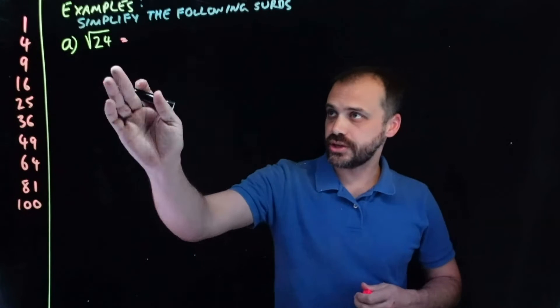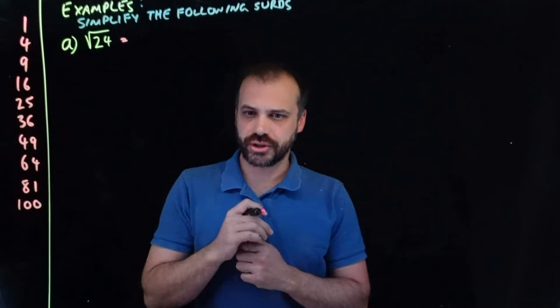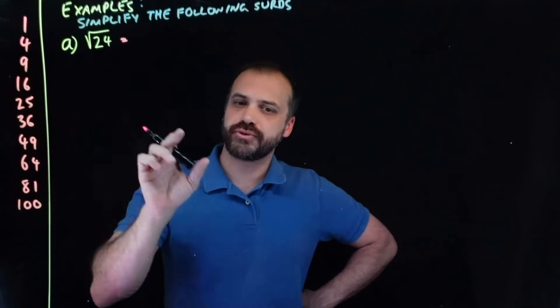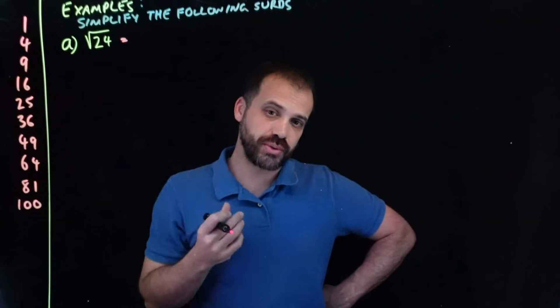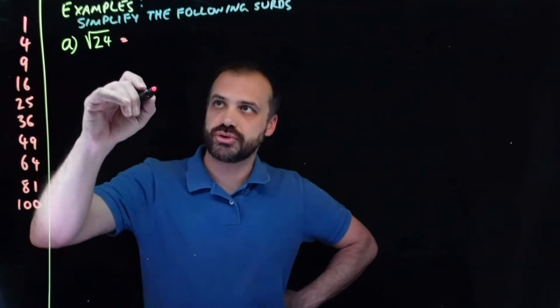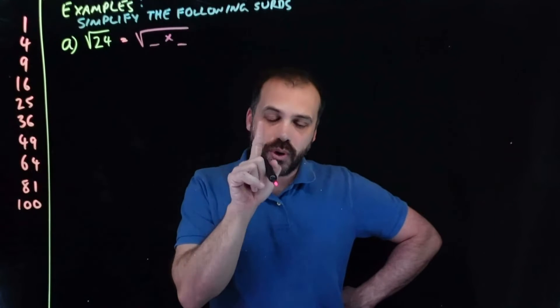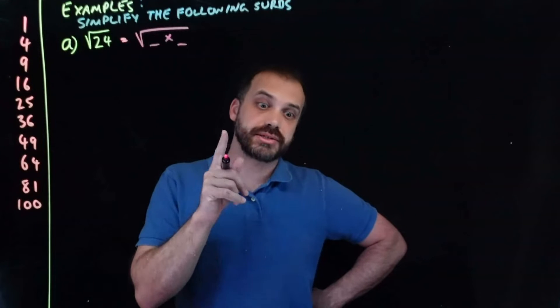Let's look at some surds. Here's our first surd, and we are going to simplify the following surd. So how do we do it? We look at the square root of 24. We look at the number 24, the thing inside the surd, inside the square root, and we say, can I break this up into two other numbers, and one of those numbers be a square number?